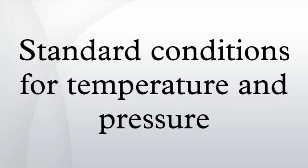Vm = 8.3145 × 298.15 / 100.000 = 24.790 m³/kmol at 25 degrees Celsius and 100 kPa. Vm = 378.61 ft³/lbmol at 60 degrees Fahrenheit and 14.73 psi. Technical literature can be confusing because many authors fail to explain whether they are using the ideal gas constant R or the specific gas constant Rs. The relationship between the two constants is Rs = R / M, where M is the molecular weight of the gas.